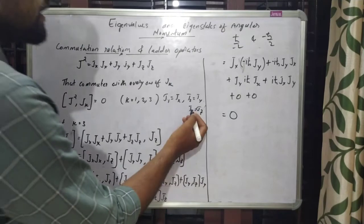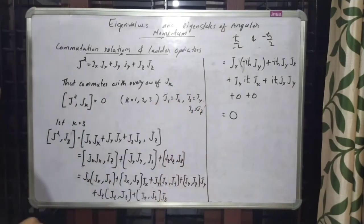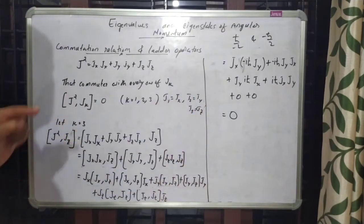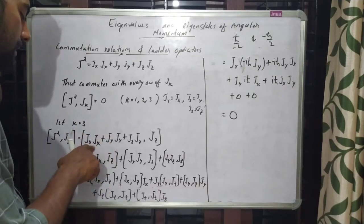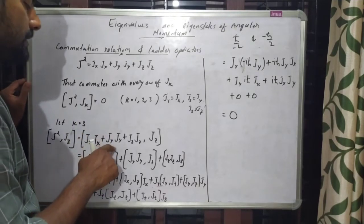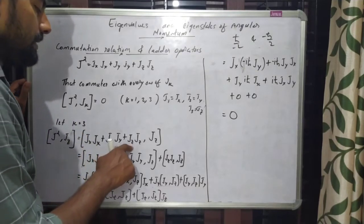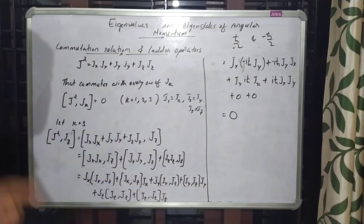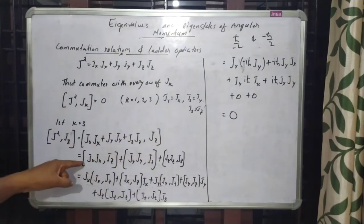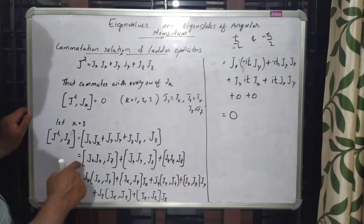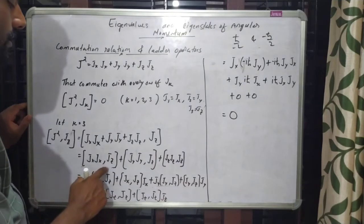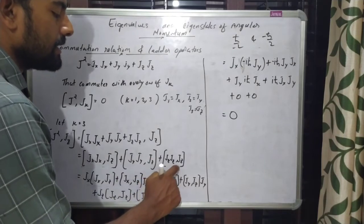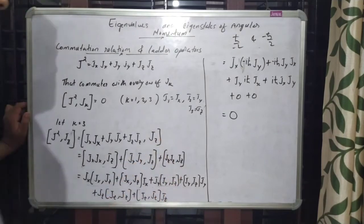For k = 3, the commutator [J², Jz] equals the commutator of (JxJx + JyJy + JzJz) with Jz. We can expand this commutator bracket as [JxJx, Jz] plus [JyJy, Jz] plus [JzJz, Jz].